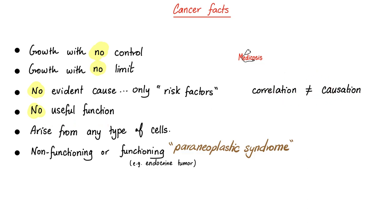Cancer can arise from any type of cell in your body. It could be non-functioning, i.e. non-secreting, or functioning, i.e. secreting. And those secreting ones are called paraneoplastic syndromes.